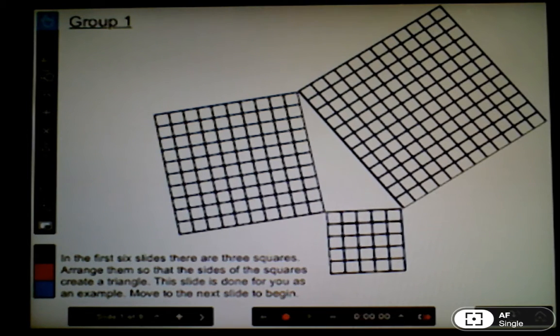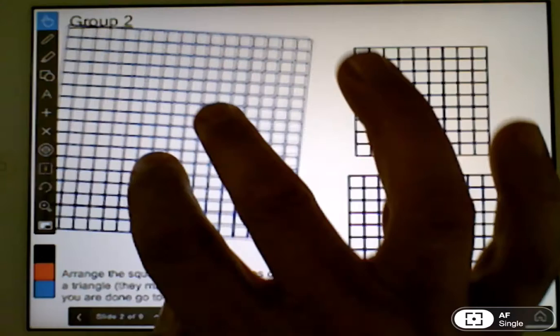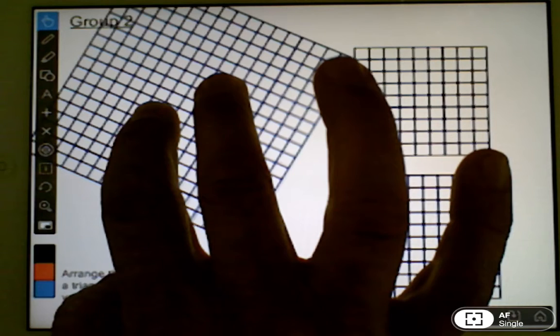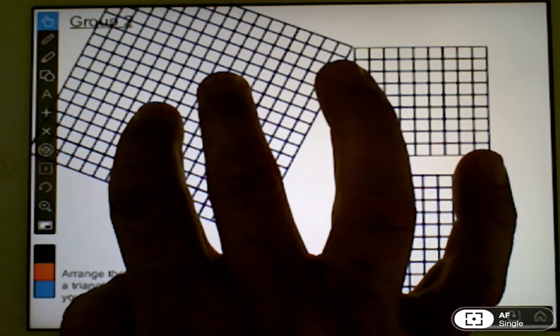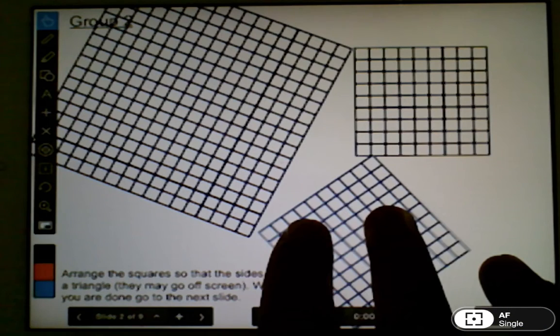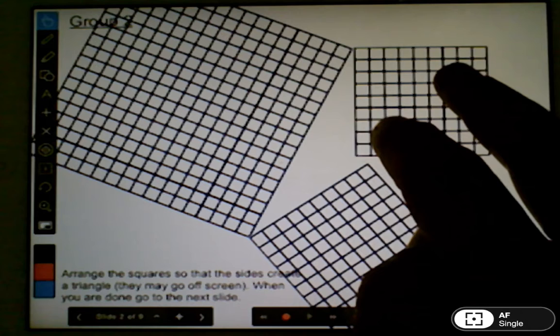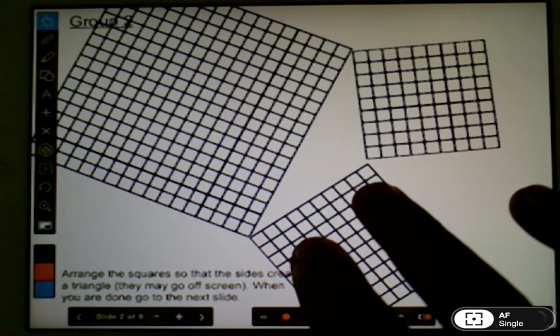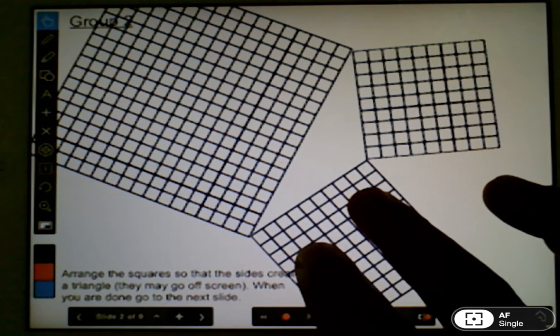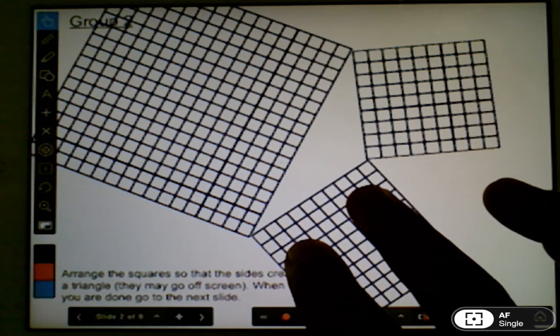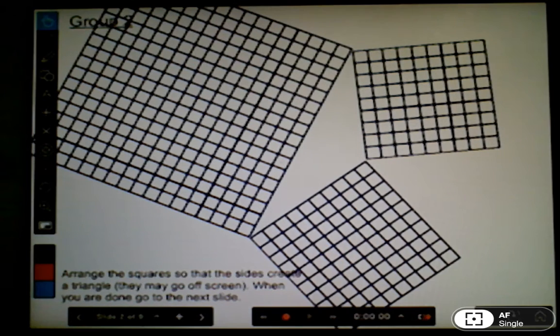The first one is done for them, but as you can see they go to the next one and they have three squares and they have to make a triangle out of them. They just do that by manipulating them so that the sides form a triangle. They don't have to be perfect, but they should be as close as they can get. If the squares go off the screen, that's not a big deal.